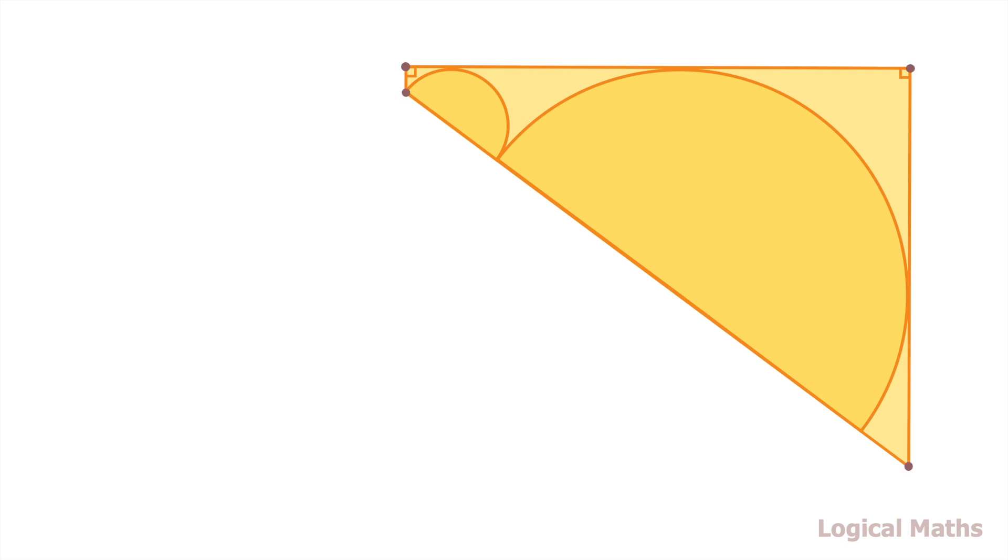Mark vertices of the trapezoid as A, B, C, D. Also mark centers of the semicircles as E and F. And finally mark the contact point of two semicircles as G.